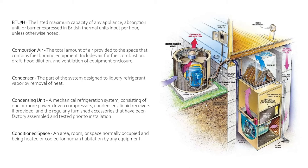Next, BTU/H — this is a listed maximum capacity of any appliance, absorption unit, or burner expressed in British thermal units input per hour unless otherwise noted. Essentially, it's just a measurement of energy. Next we have combustion air. That's the total amount of air provided to the space that contains fuel burning equipment. It includes air for fuel combustion, drafts, hood dilution, and ventilation of equipment enclosure. When combustion happens, you're using up oxygen in the air, so combustion air adds back in the air being used for combustion. Without it, oxygen would lower enough to where you would lose combustion.